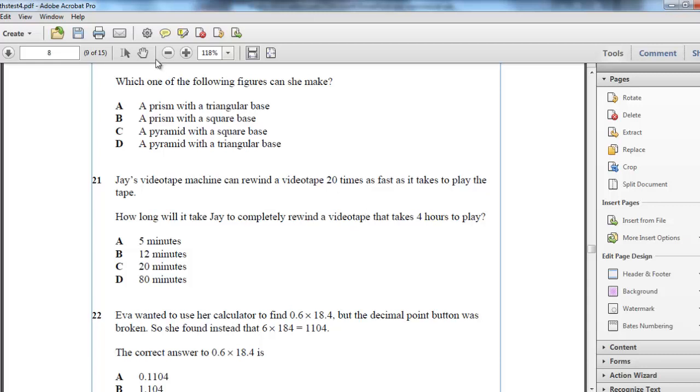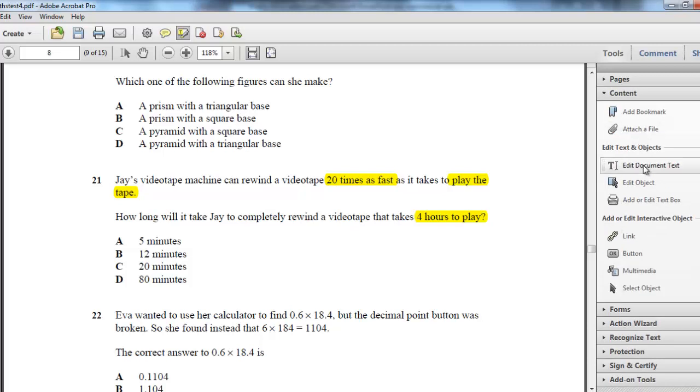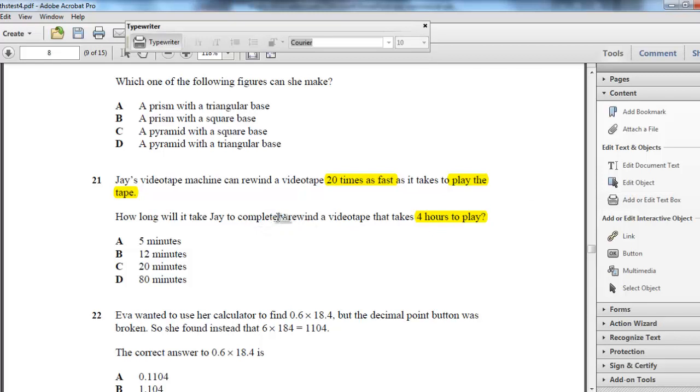Jay's videotape machine can rewind a videotape twenty times as fast as it takes to play the tape. As it takes to play the tape. Four hours to play this particular tape. So that's really important information. Let's look at how we deal with this information. So it's asking how long would it take to rewind the videotape? We know that rewinding is twenty times faster than playing.